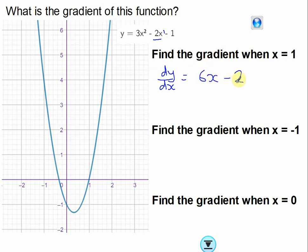It allows us to find the gradient whenever we want to. So we're going to find it when x is 1. You just put a 1 in here. So it would be 6 lots of 1 minus 2, which is of course 4. And you saw that in the GeoGebra file that I showed you.